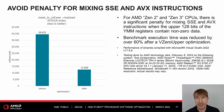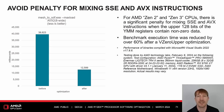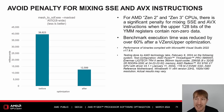For Zen 2 and Zen 3 CPUs, there is a significant penalty for mixing SSE and AVX instructions when the upper 128 bits of the YMM registers contain non-zero data. Transitioning in either direction will cause a micro-fault to spill or fill the upper 128 bits of all 16 YMM registers, with an approximate 100-cycle penalty. To avoid this penalty, a VZEROUPPER or VZEROALL instruction should be used to clear the upper 128 bits of all YMM registers when transitioning from AVX code to SSE or unknown code. In this example, benchmark execution time was reduced by over 60% after a VZEROUPPER optimization. Thanks to its microarchitecture improvements, Zen 4 does not have this penalty.